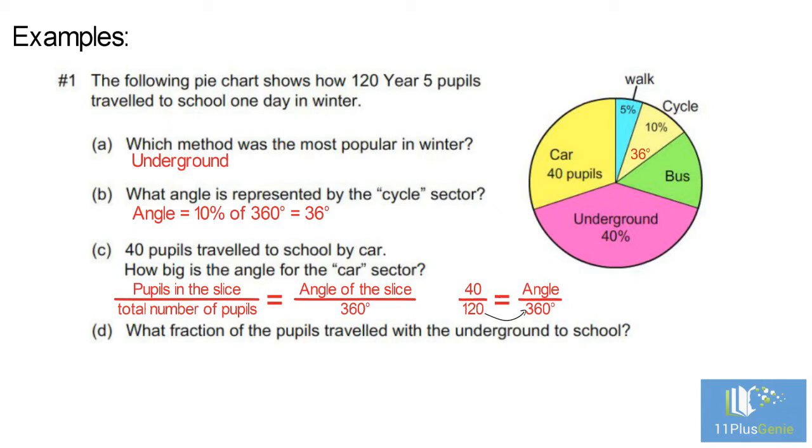We must times 120 by 3 to get 360. So we must times 40 by 3 to get the number of pupils. 40 times 3 equals 120. The angle for the car sector is 120 degrees.